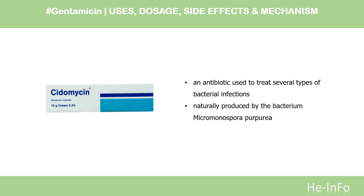What is gentamicin? Gentamicin is an antibiotic used to treat several types of bacterial infections. This may include bone infections, endocarditis, pelvic inflammatory disease, meningitis, pneumonia, urinary tract infections, and sepsis, among others. It is not effective for gonorrhea or chlamydia infections. Gentamicin is naturally produced by the bacterium Micromonospora purpurea, was patented in 1962, and approved for medical use in 1964. It is on the World Health Organization's list of essential medicines.